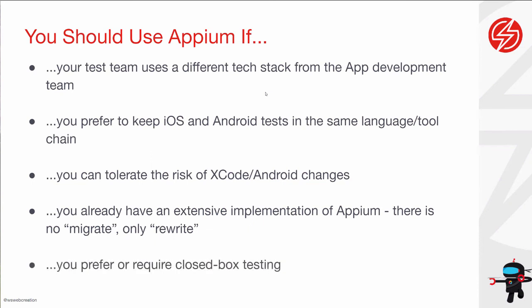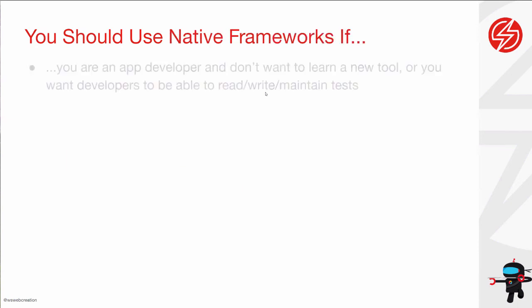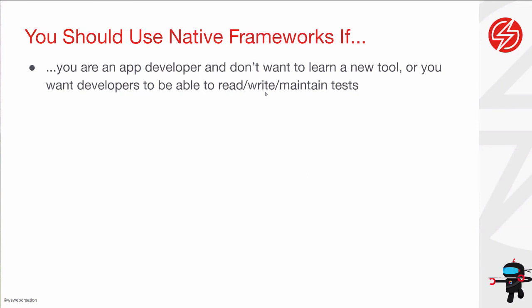It should also be noted that Appium for the most part is a black-box testing framework — it allows you to perform commands on a device and see the result of those commands. Whereas XCUITest and Espresso actually let you get into the internals of the device itself and look at things like battery usage, geolocation, and all sorts of settings to tweak and change to your heart's content. You should use native frameworks if you are an app developer and you don't want to learn a new tool — Appium is an abstraction between you and the native code, and if you don't need that abstraction and already know Espresso or XCUITest, you should stick with that.